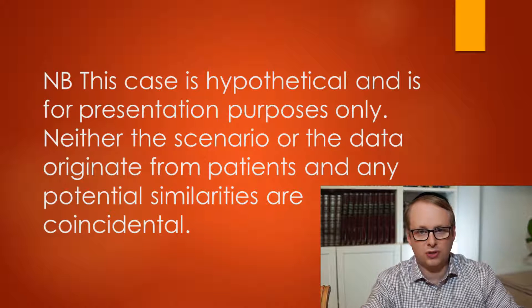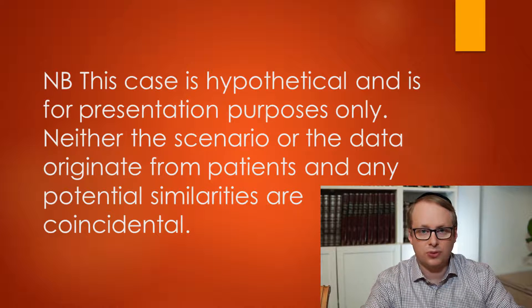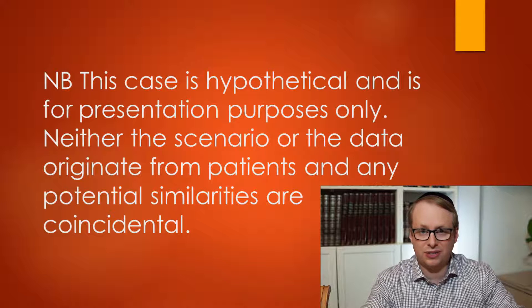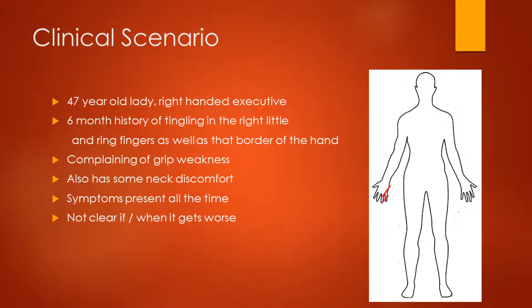As with the previous and all future cases, these are hypothetical examples and do not represent live patients. We have a 47-year-old lady who is a right-handed business executive. She has a 6-month history of tingling in the right little and ring fingers as well as that border of the hand, and she is complaining of weakness of her grip. There is also some neck discomfort, and symptoms are present all the time. It's not clear if and when it gets worse.